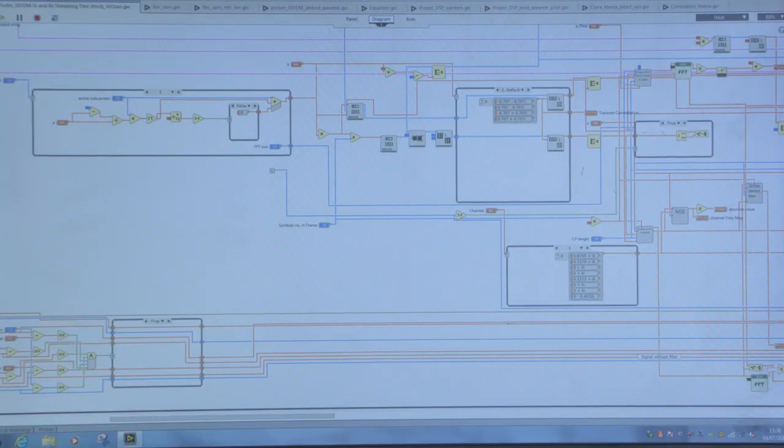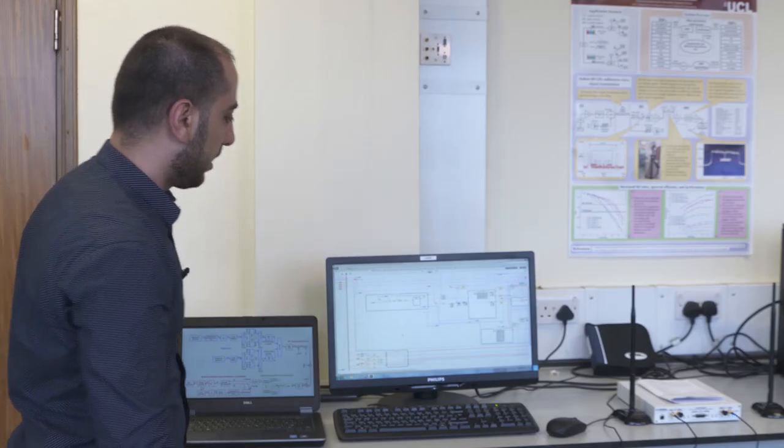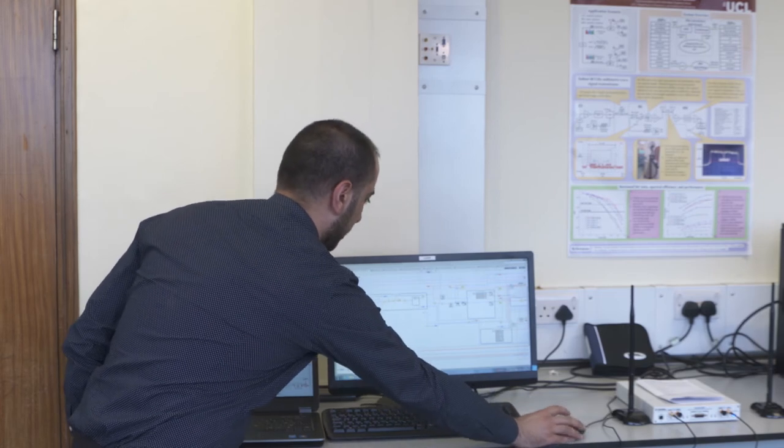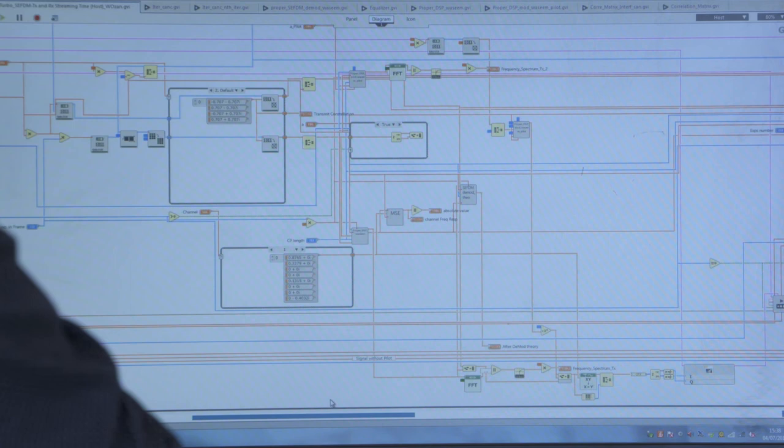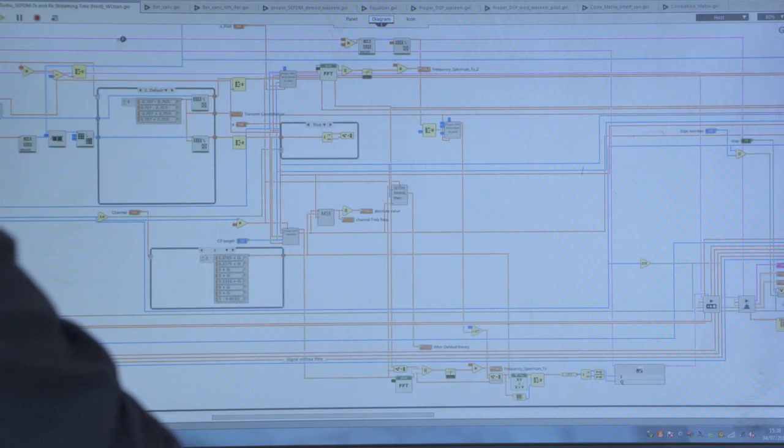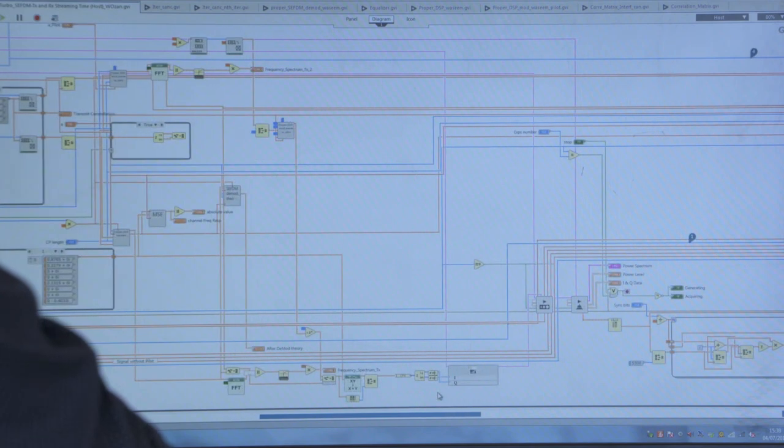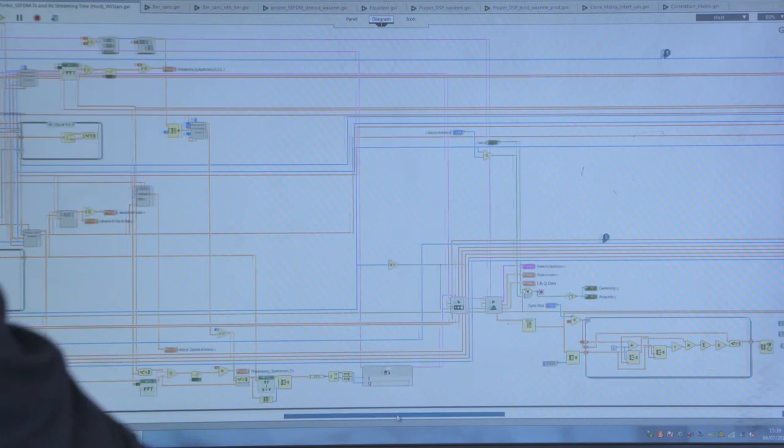Here's our testbed setup. We start by setting the parameters for the whole system, then we have channel coding, and then we do mapping for our signals to get complex symbols. Then this signal goes into modulation, which is SEFDM modulation with non-orthogonal signals.